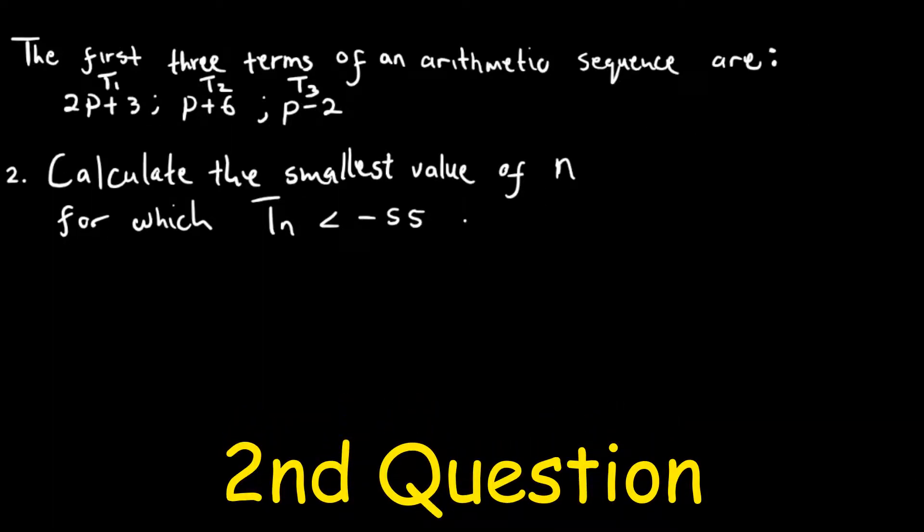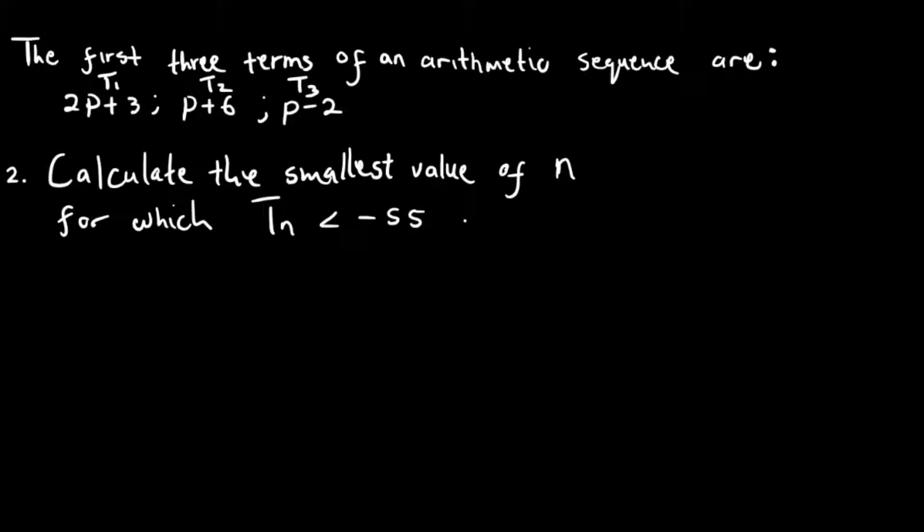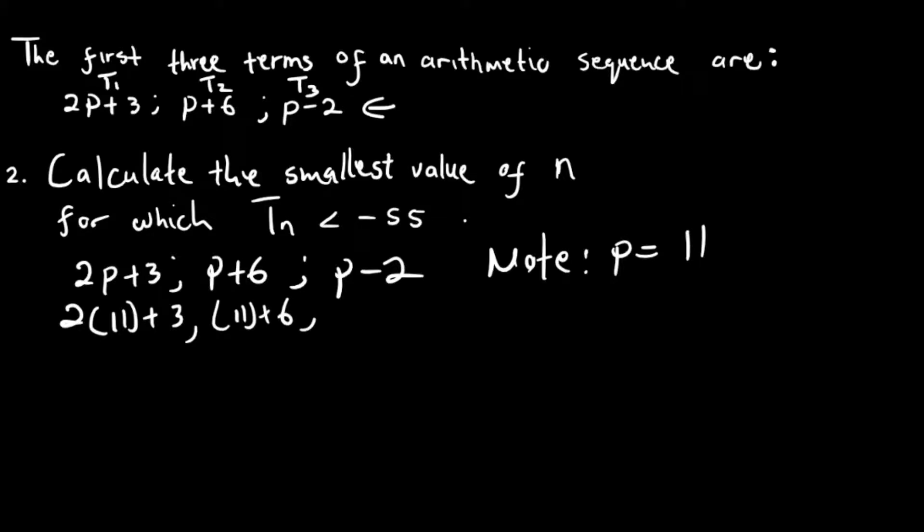Now, the second question says calculate the smallest value of n for which tn is less than minus 55. So the first thing we need to do is we need to write our sequence, which is 2p plus 3, p plus 6, p minus 2. So it's the very same sequence as this one. And then you must note that we just calculated that p is equal to 11. So we're going to substitute where there's p and put 11. 11 plus 6, 11 minus 2. And then our sequence is going to be 25, 17, and 9. So now we have our sequence.